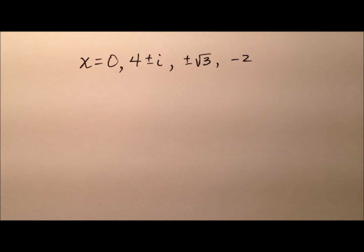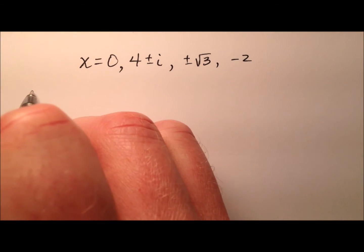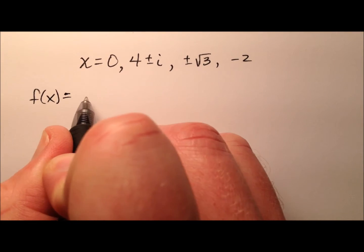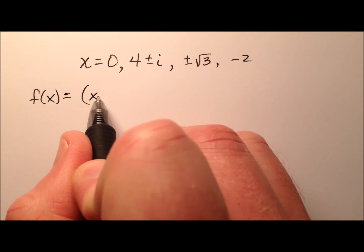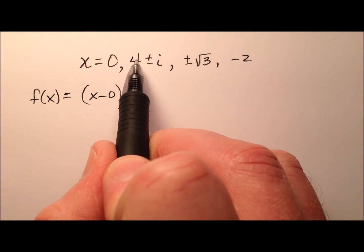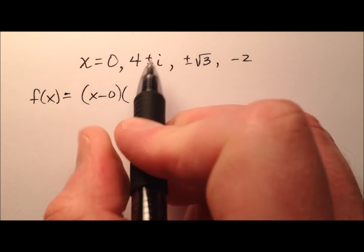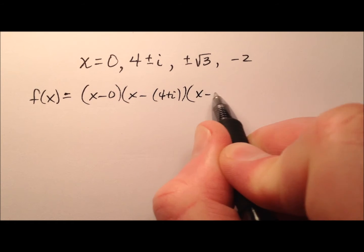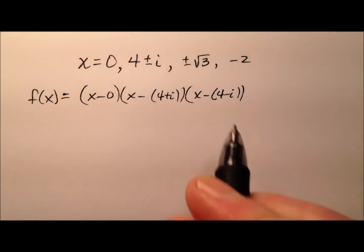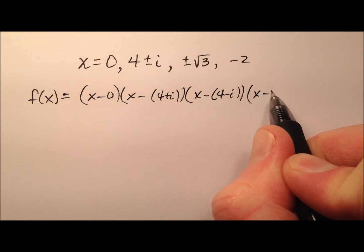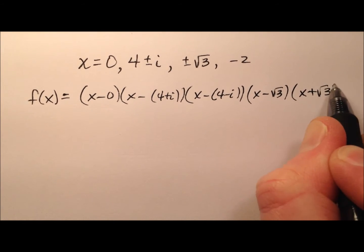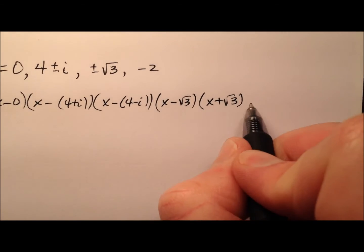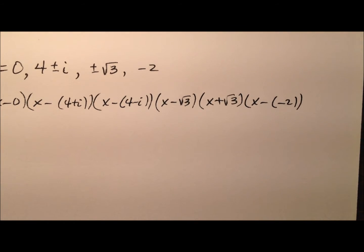So the way I need to start this is to first write all of these in factored form. So each root can be written as x minus k where k is the root. So let's say f of x equals, and let's just go root by root, so x minus 0. Here I have a 4 plus i and a 4 minus i so it'll be x minus 4 plus i and x minus 4 minus i. I also have x minus the square root of 3 and x plus the square root of 3 and finally an x minus a negative 2.